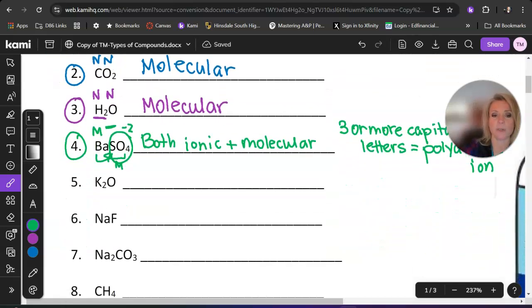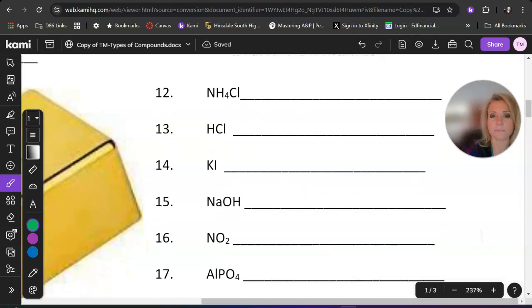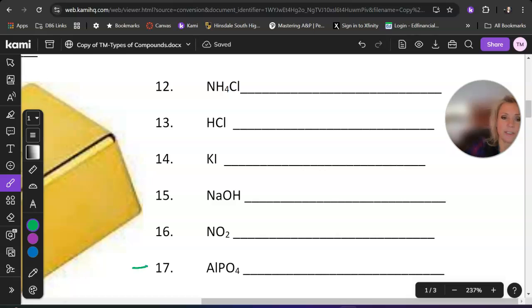Okay, let's try some more. Let's take a look at number 17. So at number 17, the first thing that I recognize is that I have three capital letters. That means I already know already that this is both ionic and molecular.